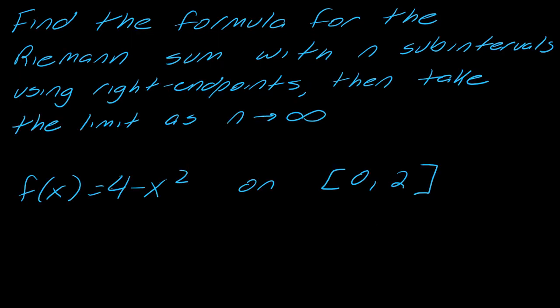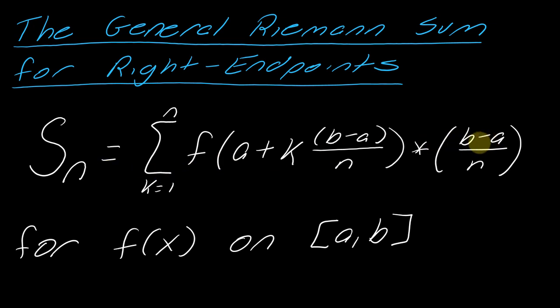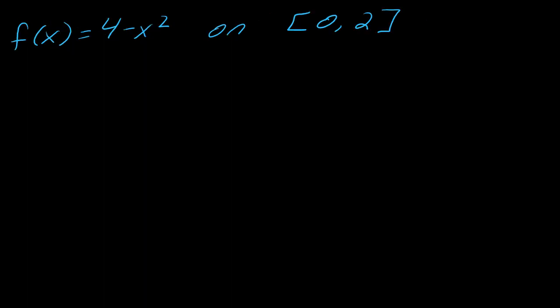So what we're going to do is we're going to find the formula for the Riemann sum with n subintervals using right endpoints, and then we're going to take the limit as n goes to infinity for this example here. So where we want to start is we're going to use this formula for our closed intervals. So if you're trying to figure out how this works, what I would recommend is that you use this formula and you get it all set up for this example here. So maybe pause and then hit play when you're ready to see that first part.